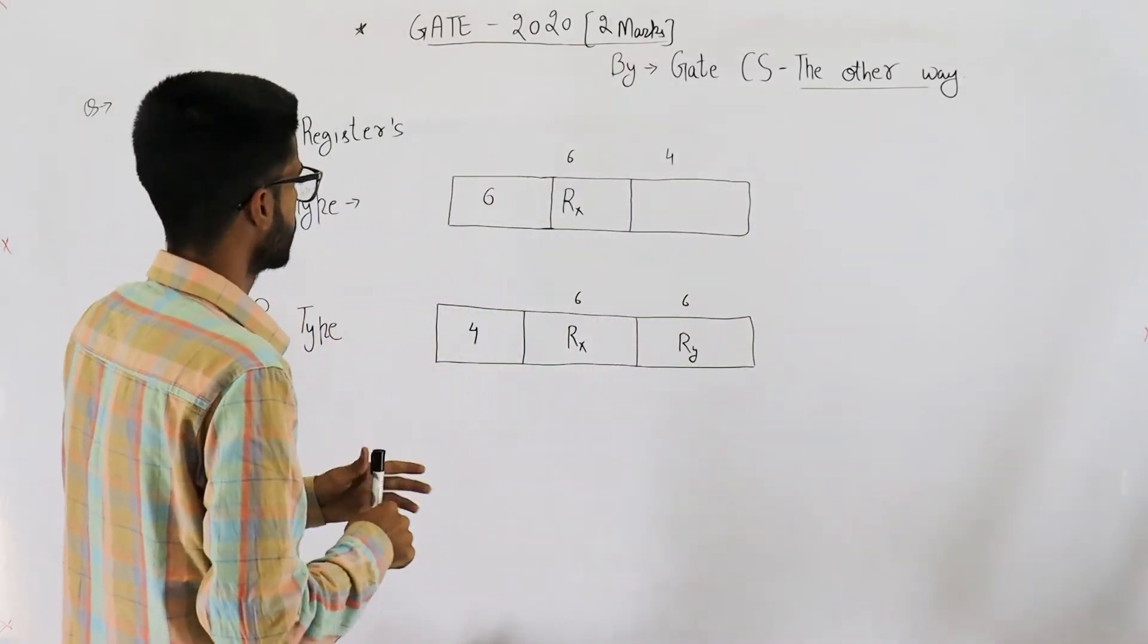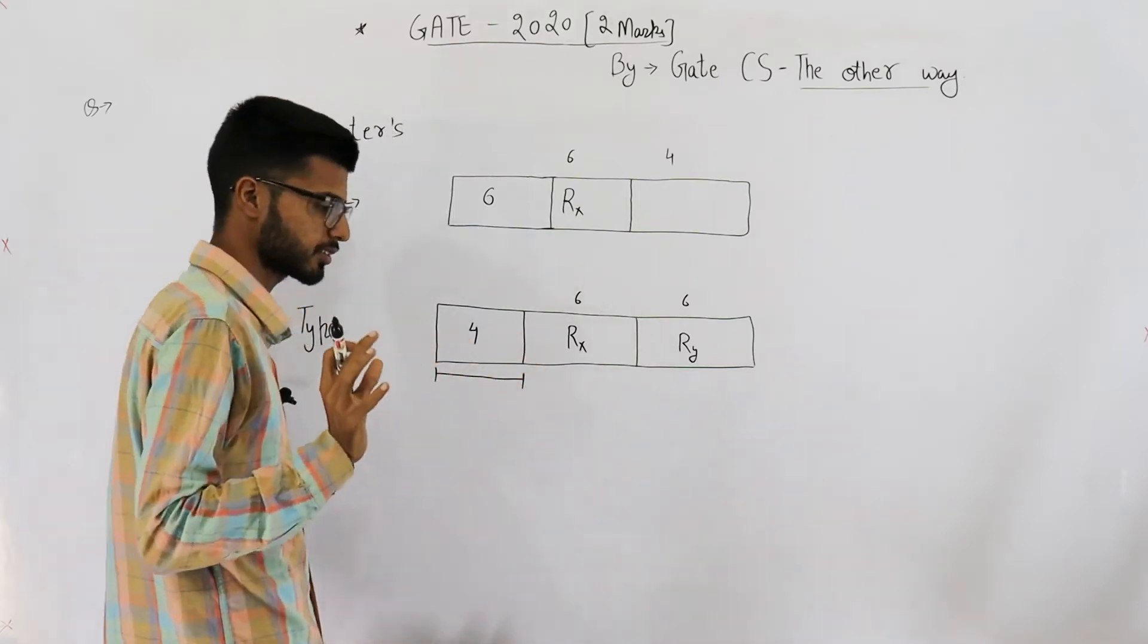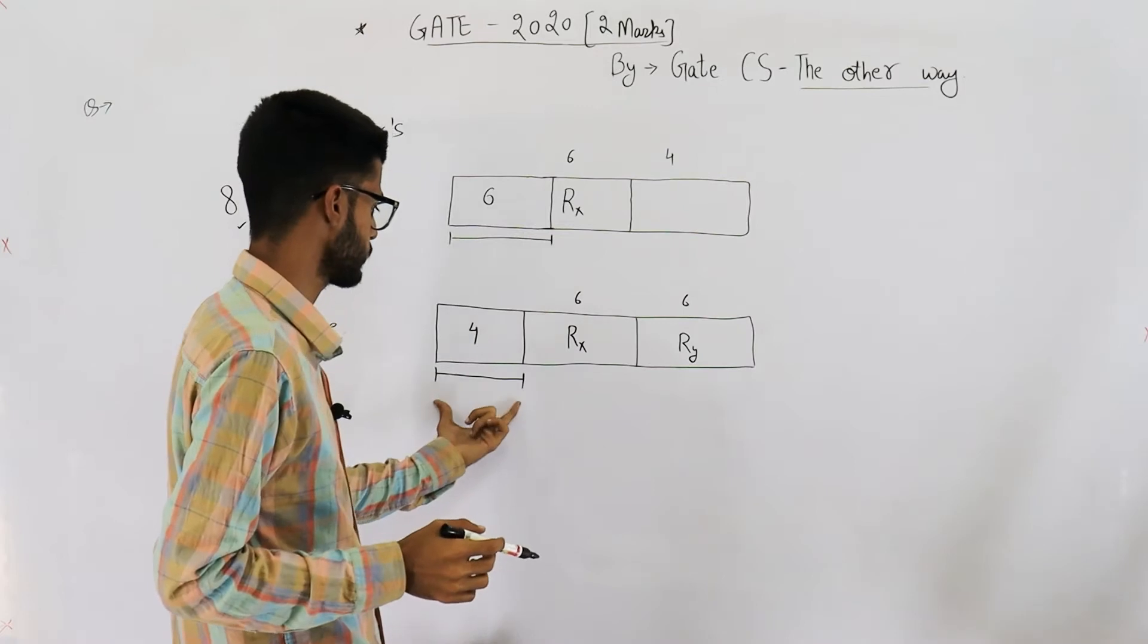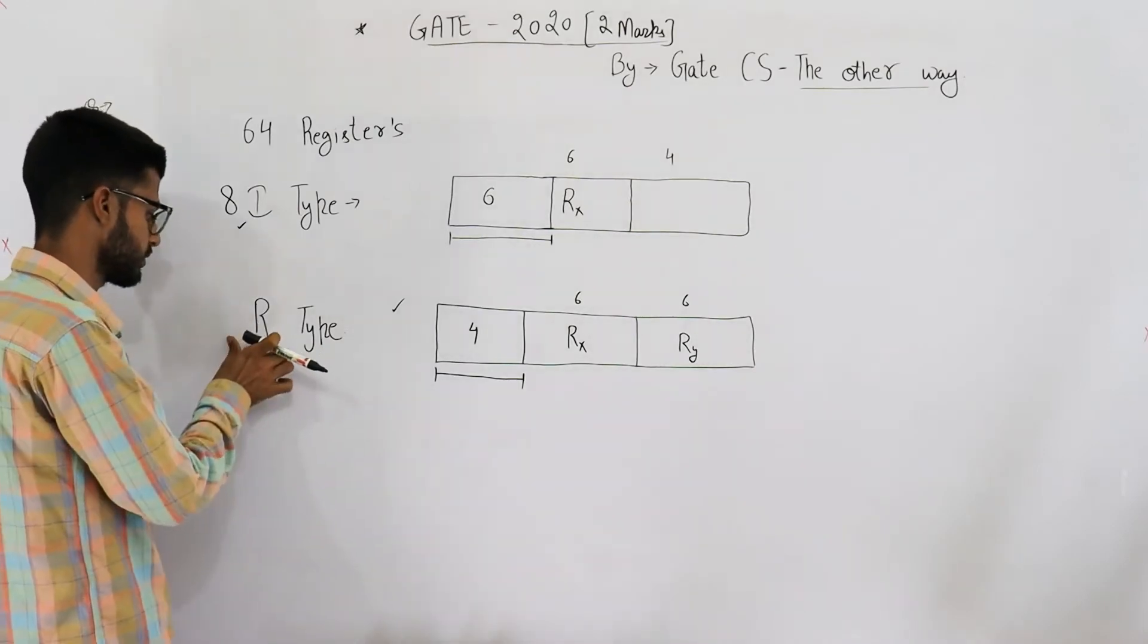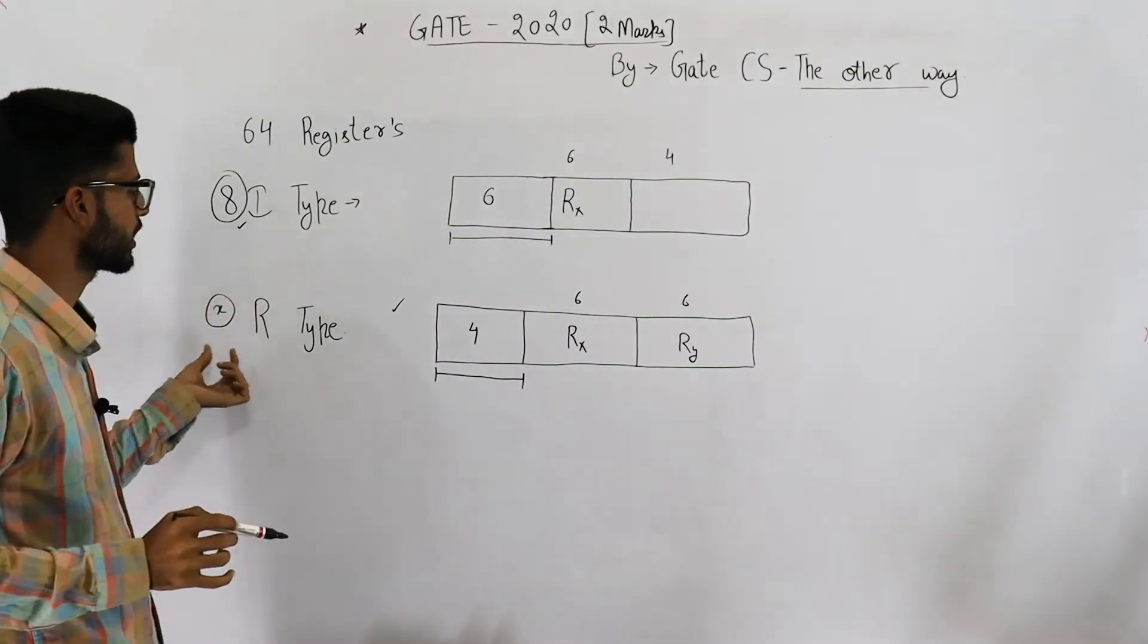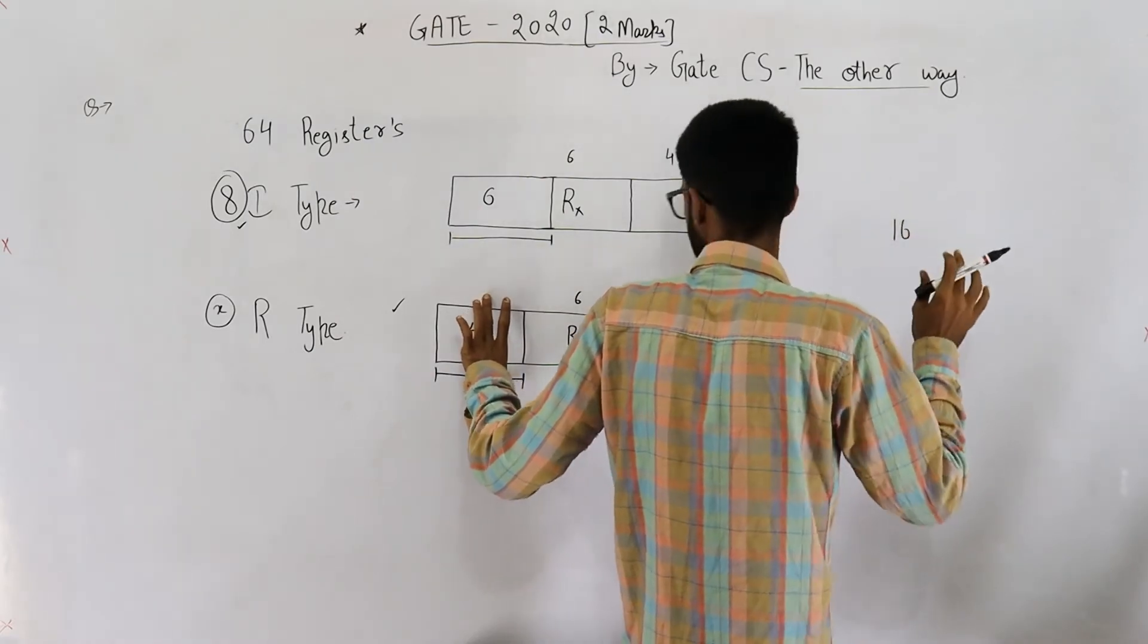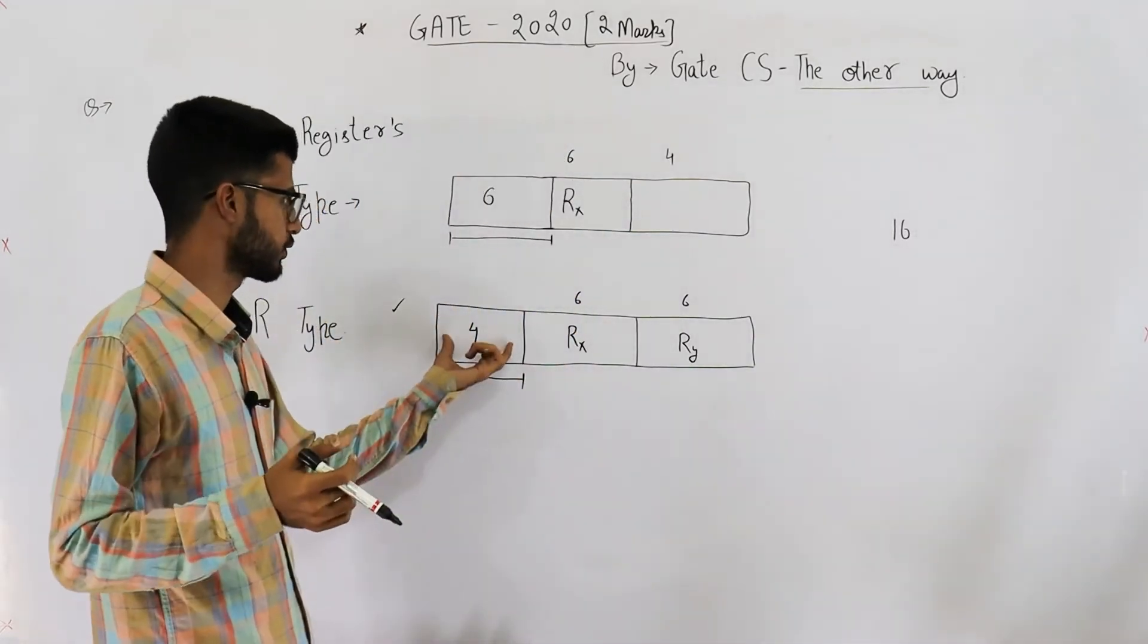Now, in this method, the instruction which has smallest opcode, that means R type because here the opcode is of four bits. Here the opcode is of six bits. So you begin with the instruction which has smallest opcode. That means R type instructions. Now you are not given how many R type instructions are supported. So we can simply assume them to be X. So X R type instructions are supported by our processor. Here the opcode is of four bits. That means with the four bits you can create 16 combinations. That means you can support 16 instructions with these four bits.